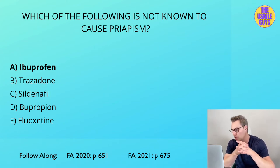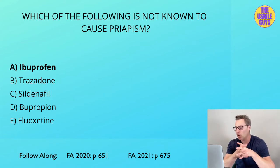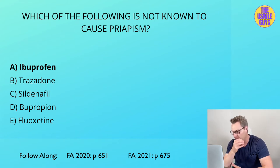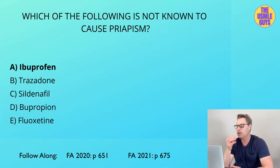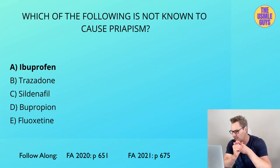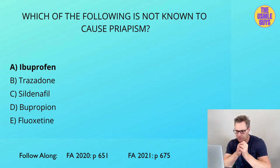Heparin and warfarin could also cause priapism. Now, if an erection is sustained for longer than four hours, it can cause irreversible damage to the penile tissue. So it is imperative that if it has lasted four hours or more, we fix it — and we can do this with either a corporal aspiration, intracavernosal phenylephrine to contract the vasculature, or surgical decompression.